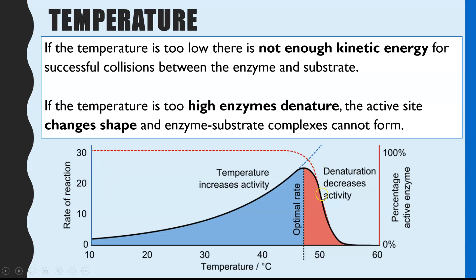If the temperature goes beyond the optimum, you then have too much kinetic energy and the enzyme denatures. What we mean by that is the active site has changed shape, and if it's changed shape, you won't get any enzyme-substrate complexes. The reason it denatures is that the bonds holding the amino acids in their fixed 3D tertiary structure in the active site are broken because of that increase in temperature.